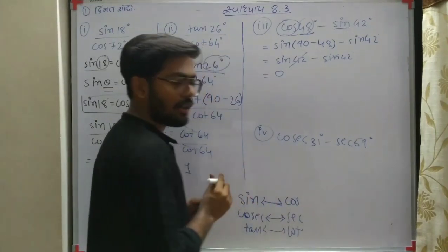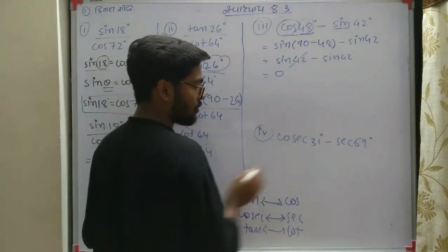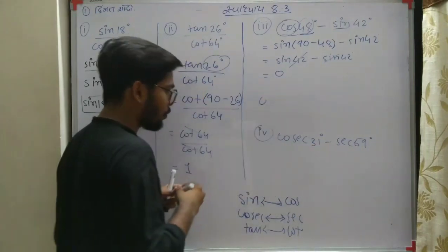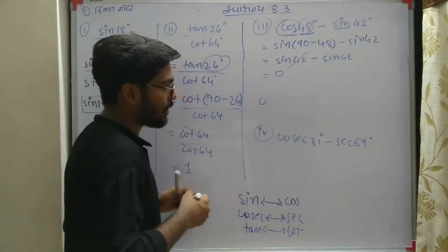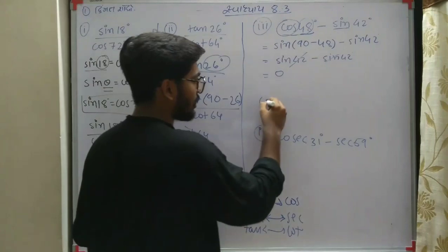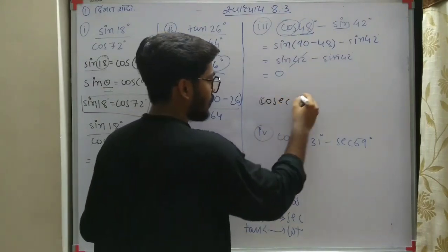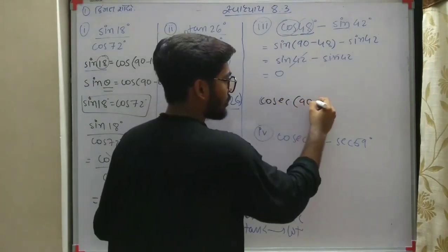Cosec is 3, minus 6. So we can't do that. Cosec 9 minus.